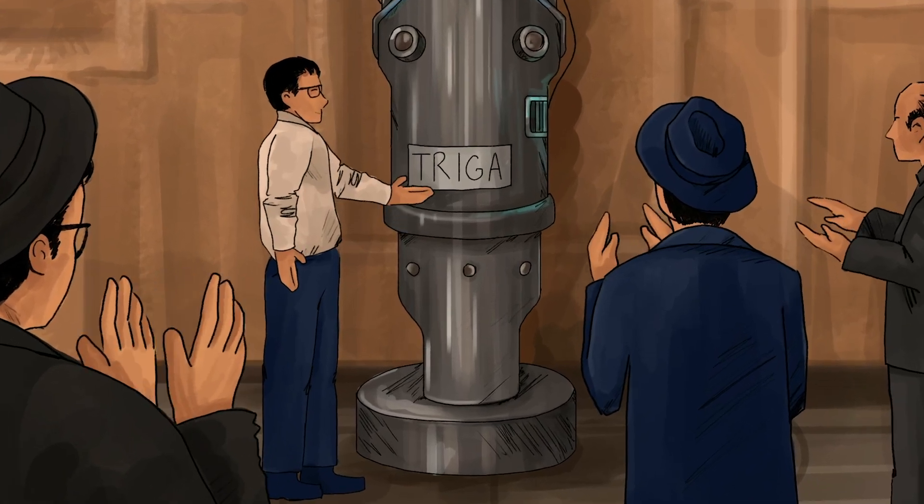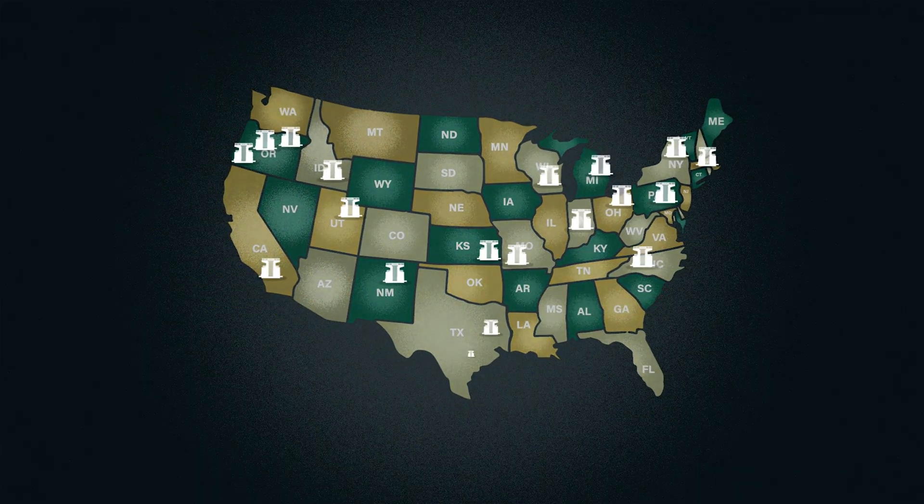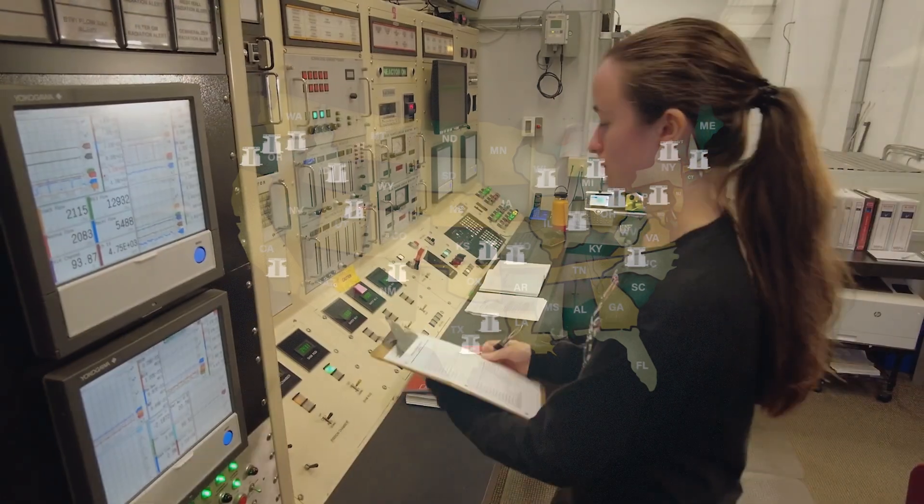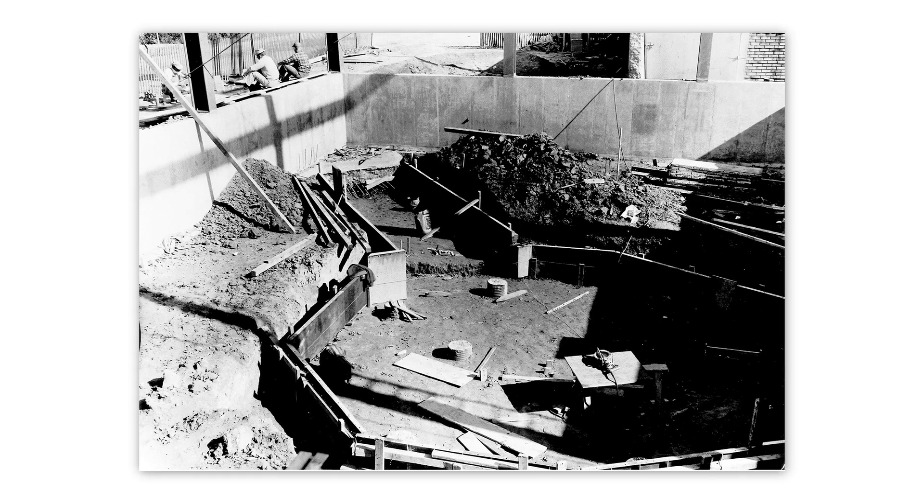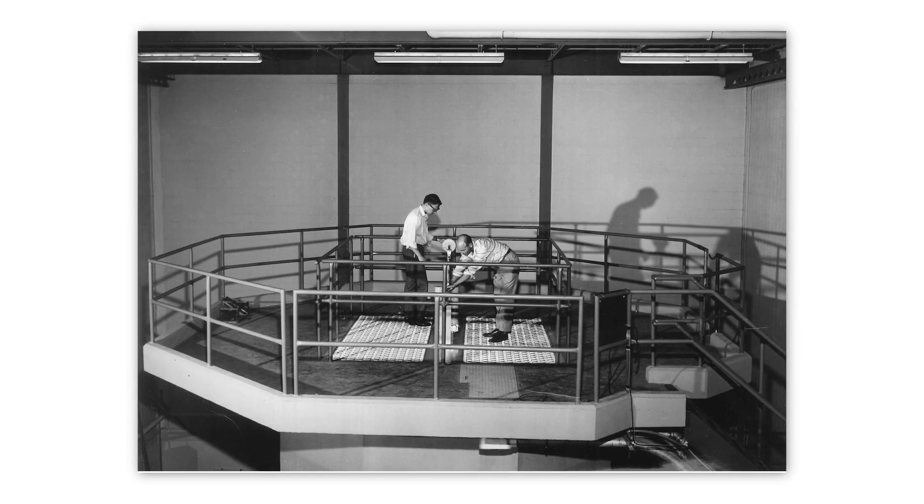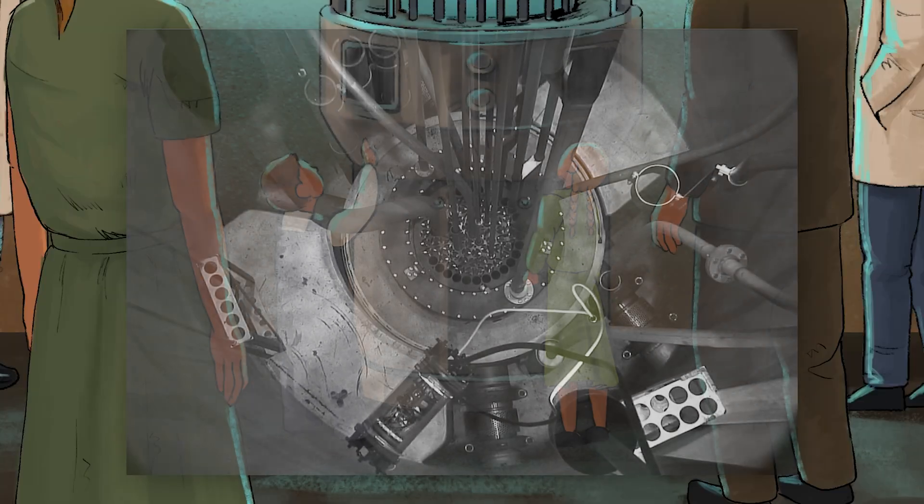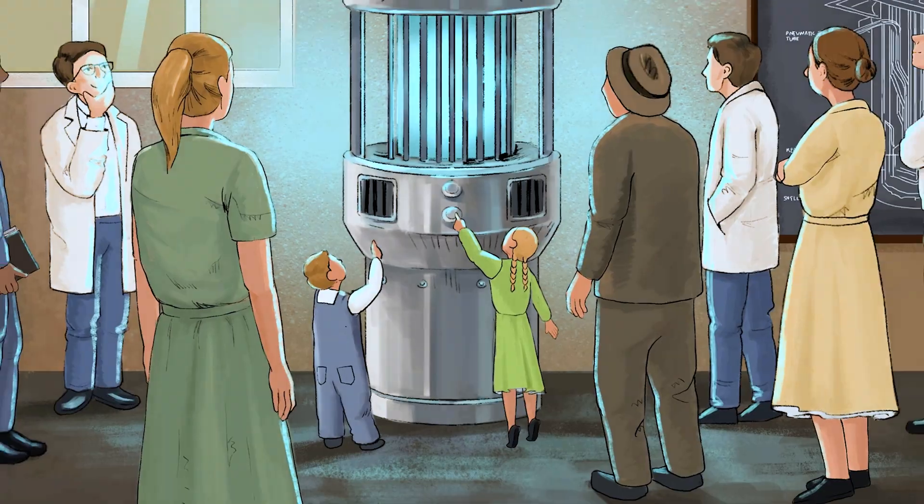They called their invention Triga. And surprisingly, there are dozens of these reactors around the US today, and many of them are located right downtown on university campuses. But if this fuel is so incredibly safe, then why haven't all the reactors around the world started using it? And how does its inherent safety actually work? This is the story of one of the most underrated inventions of the past hundred years, and what it could mean for humanity if we bring it back.